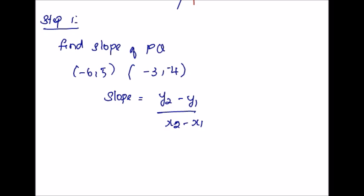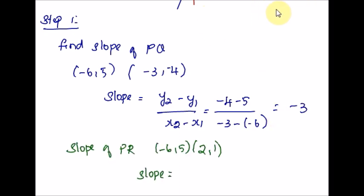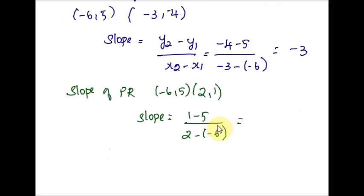Plugging in the X and Y values for PQ, we get minus 5 minus 4 = minus 9 in the numerator, and negative 3 minus (negative) = positive 3 in the denominator. Negative over positive gives a negative answer, so the slope of PQ is negative 3. Similarly, for PR, plugging in the X and Y values gives negative 4 on top and 2 plus 6 = 8 on the bottom, so the slope of PR is negative 1 over 2.